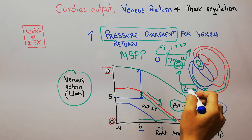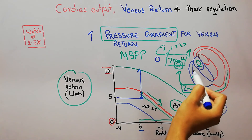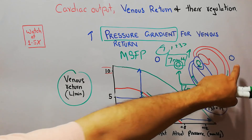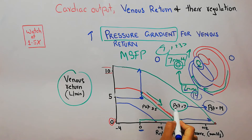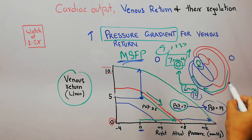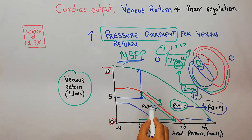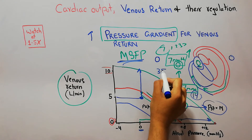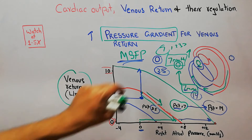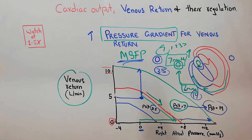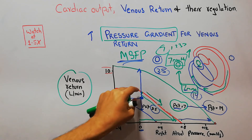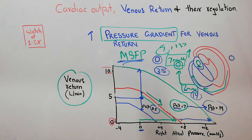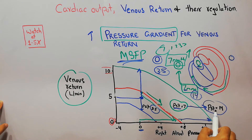Conversely, if the mean systemic filling pressure decreases to around 3.5 mmHg while RAP remains zero, the gradient decreases from 7 to 3.5, and venous return will also decrease from the normal 5 liters per minute to a lesser level. So the gradient can decrease or increase due to changes in mean systemic filling pressure.